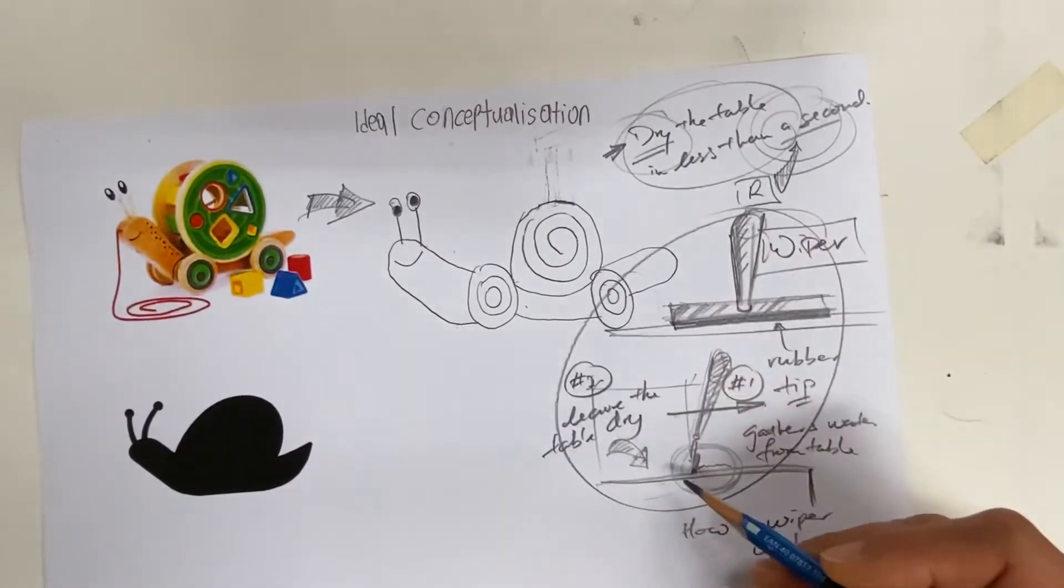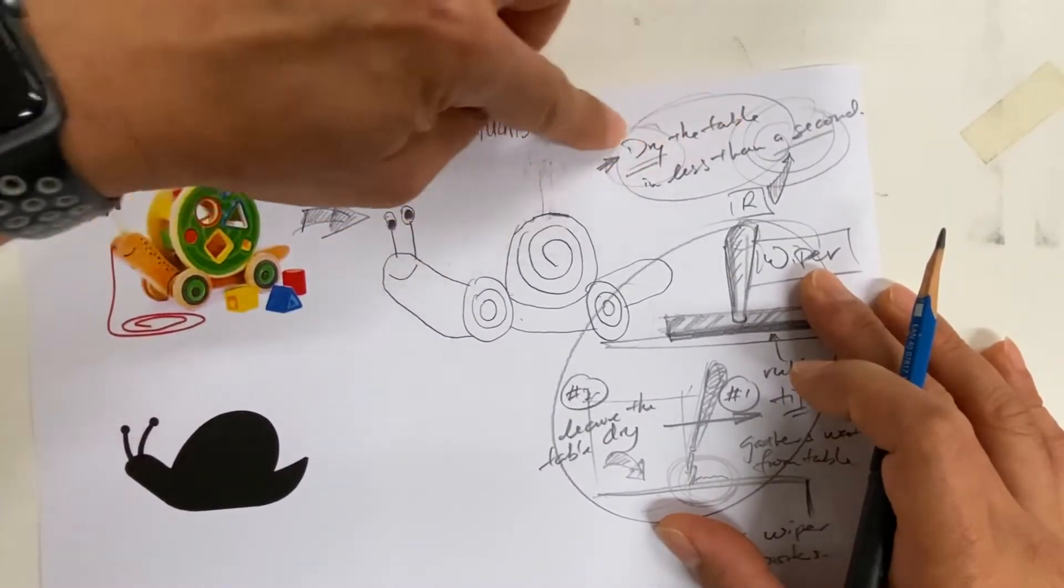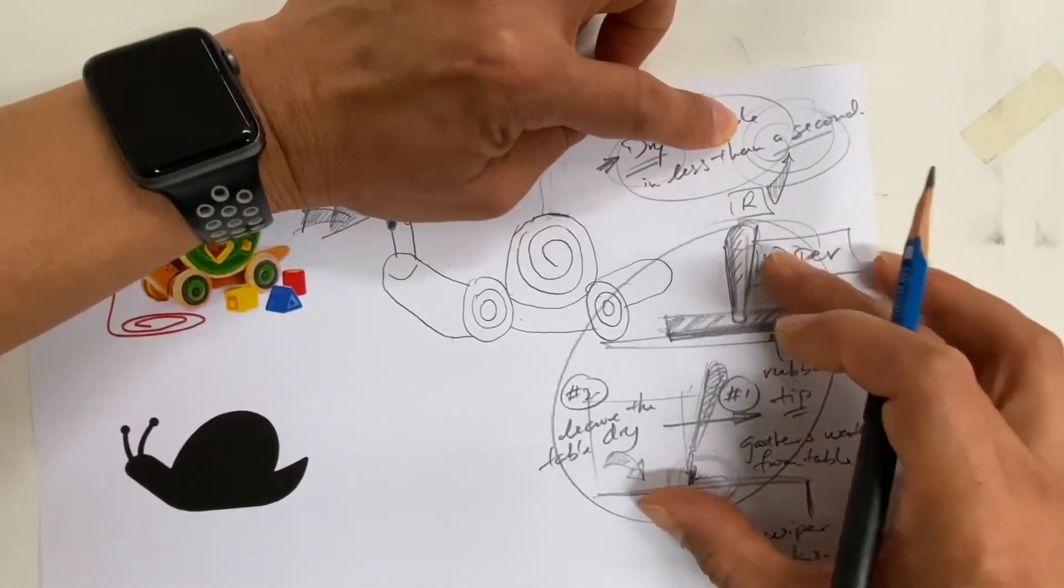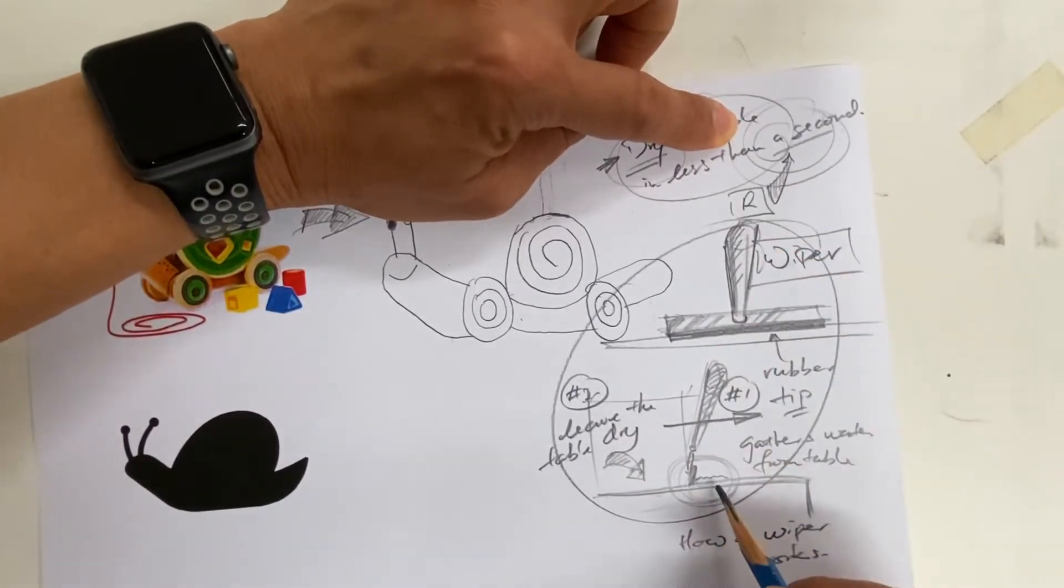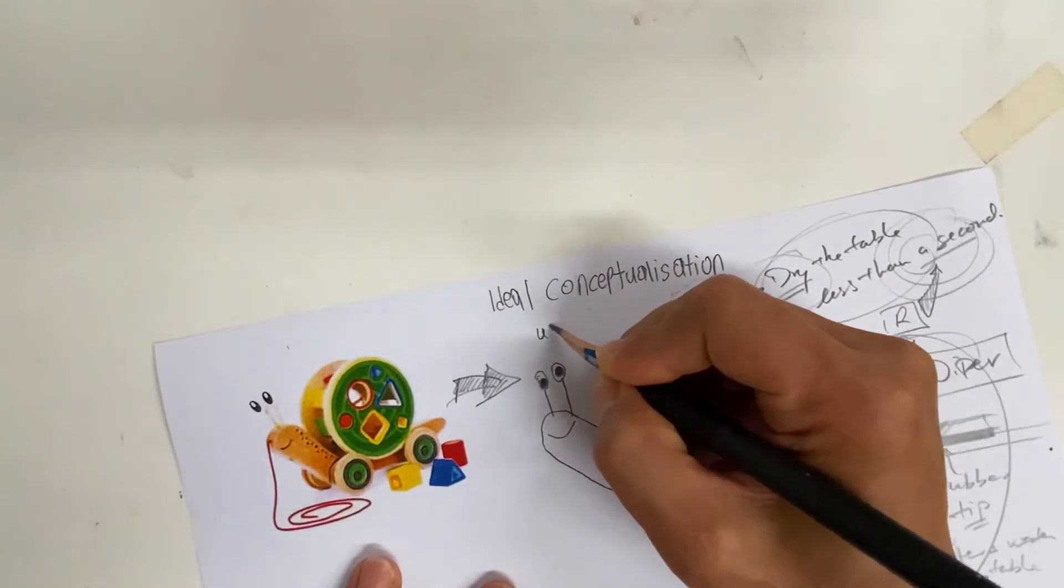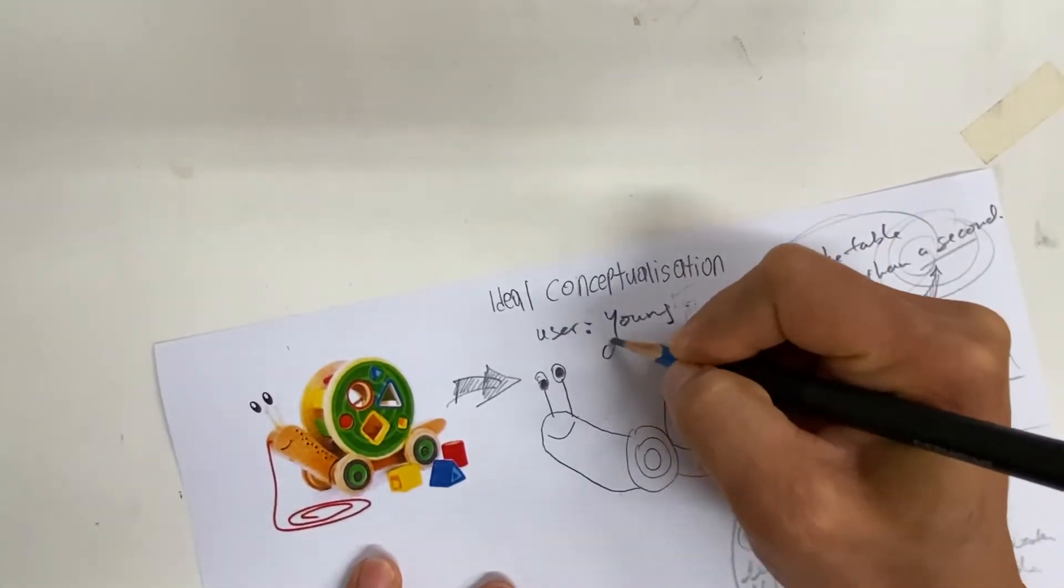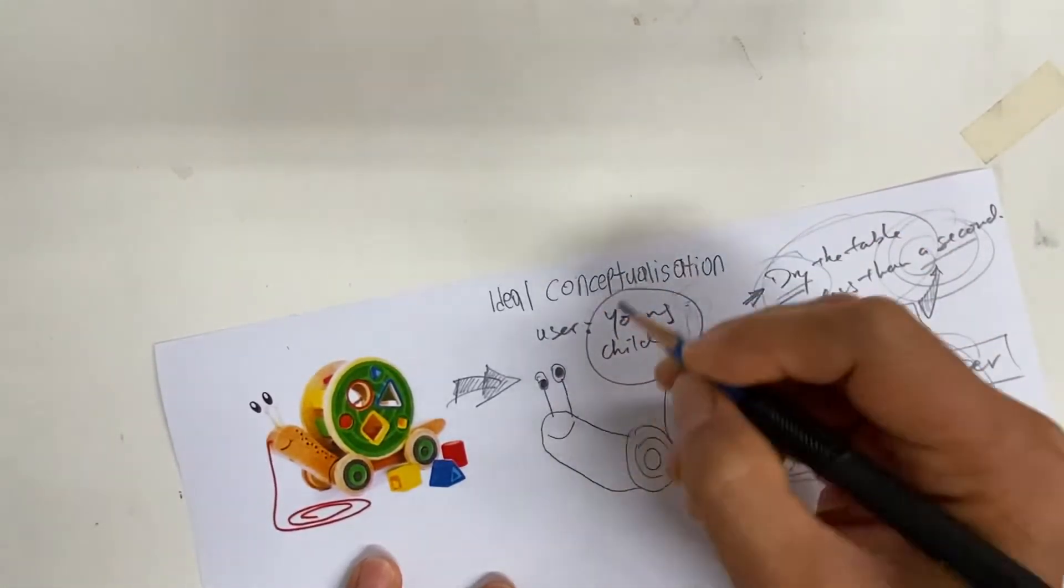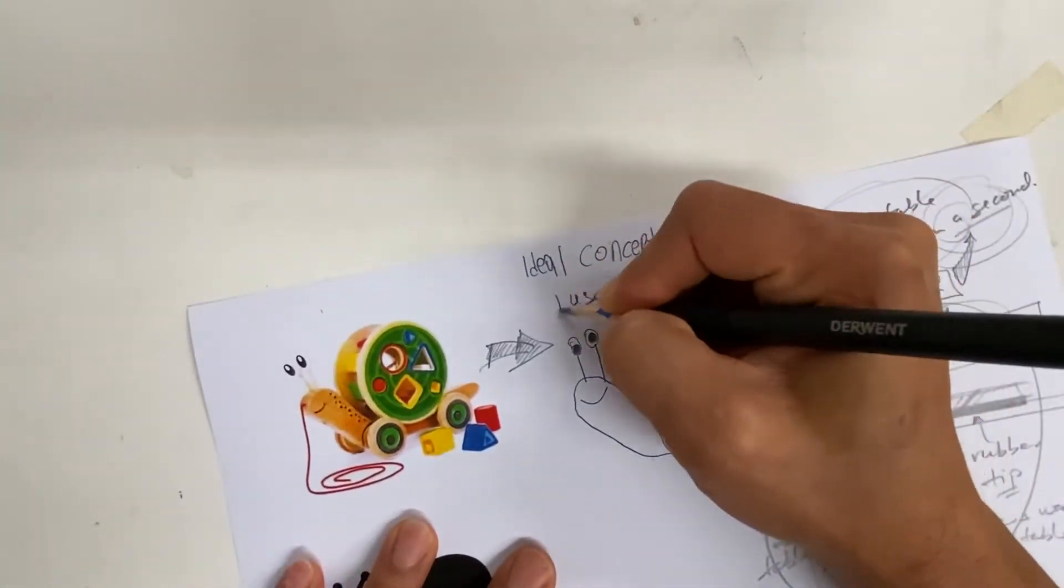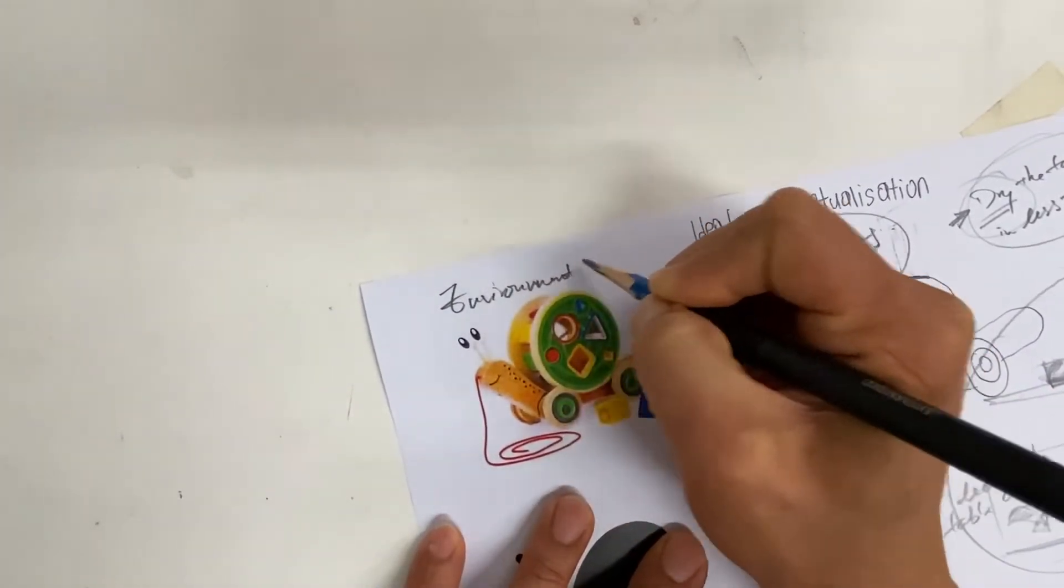And this knowledge and working through how it works through sketches and annotation, it will help you in your idea generation. Now, with this background, now that I have done my product research, and I know this is what I want to do. This is in my design specification. I want to dry the table in less than a second. I know the existing product looks like this. And I know the rubber tip works. And I think I like the shape of a snail. And assuming that the user are young, it can be a child. Maybe I want to use this at home. Environment: home.